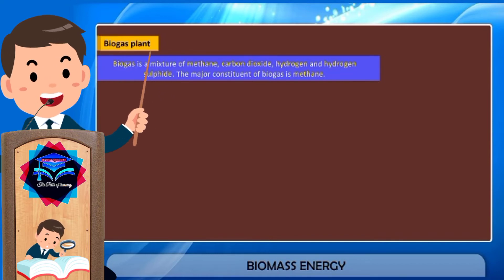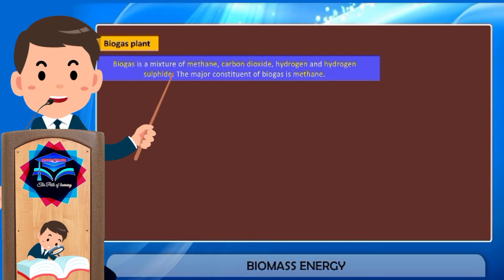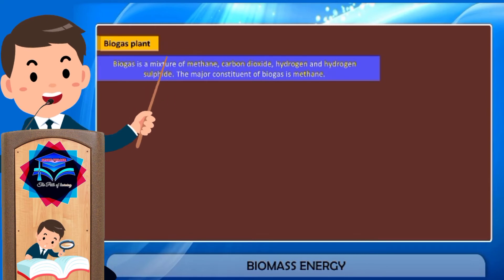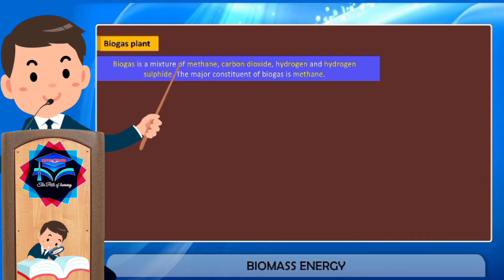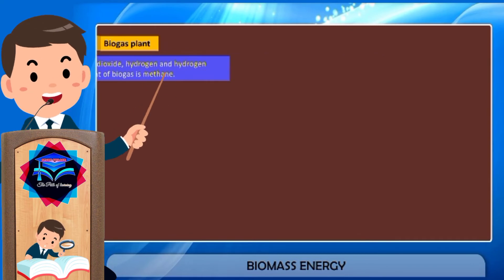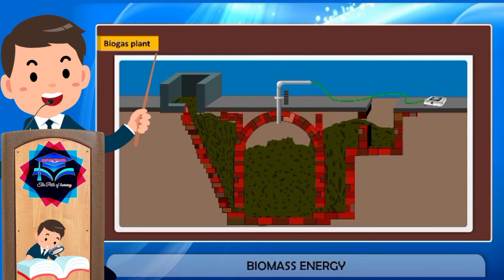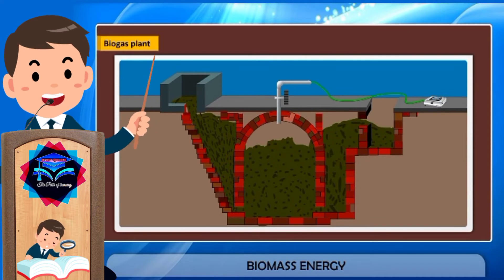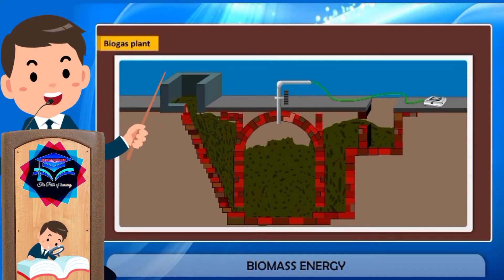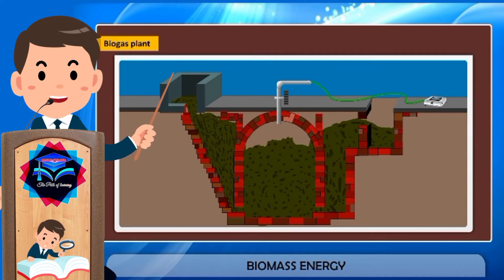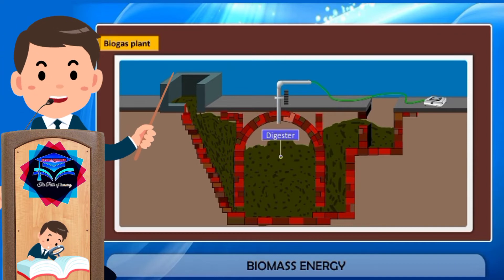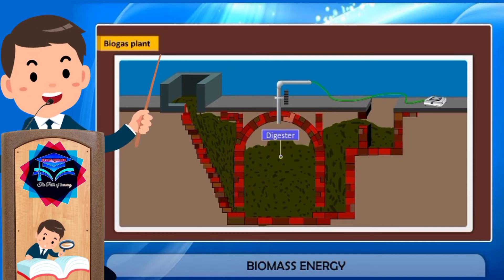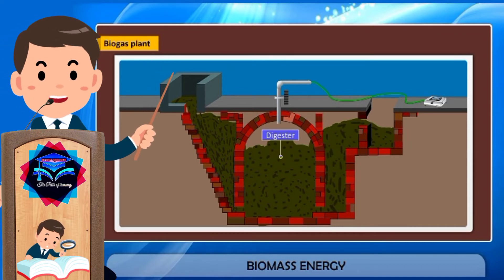Biogas is a mixture of methane, carbon dioxide, hydrogen, and hydrogen sulfide. The major constituent of biogas is methane. Let us now see how the biogas plant is constructed. A biogas plant consists of a well-shaped underground tank called a digester, which is made of bricks and has a dome-shaped roof.